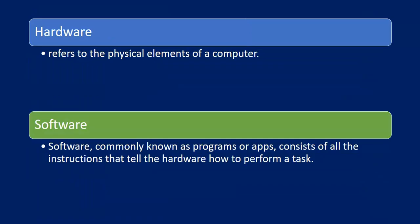When we speak about computers, we hear about two things: hardware and software. Hardware refers to the physical elements of a computer which we can touch and physically handle. Software, commonly known as programs or apps, consists of all the instructions that tell the hardware how to perform a task. So software controls the hardware — it allows you to control and use the hardware.